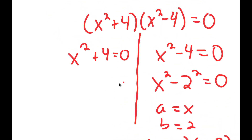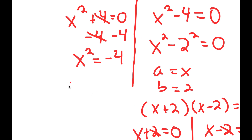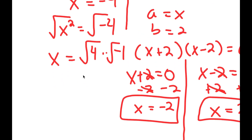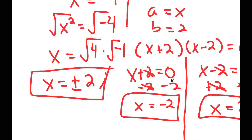Now for x squared plus 4 is equal to 0, I subtract 4 on both sides and I get x squared is equal to negative 4. If I take the square root on both sides, x is equal to the square root of negative 4, which is the same thing as the square root of 4 times the square root of negative 1. Since the square root of negative 1 is equal to i, I get x is equal to positive or negative 2i. So I actually have four solutions to this equation.